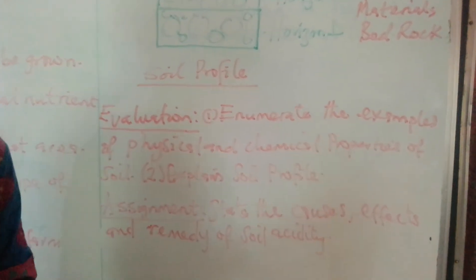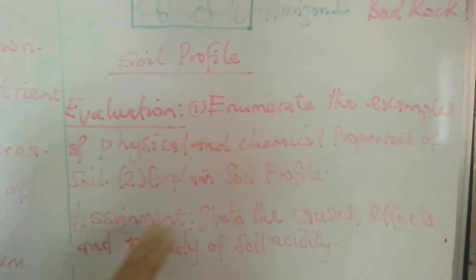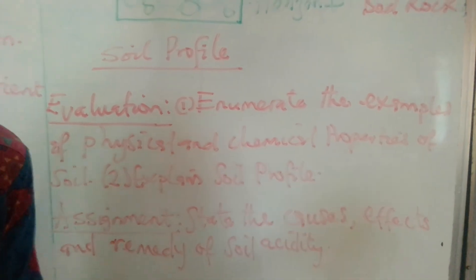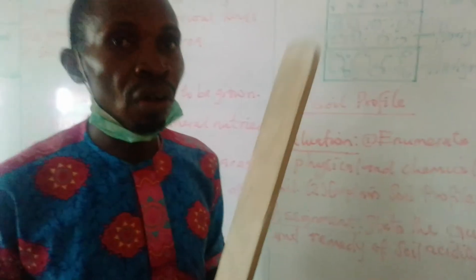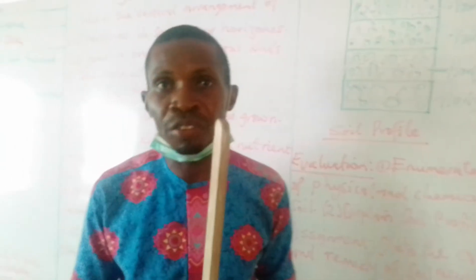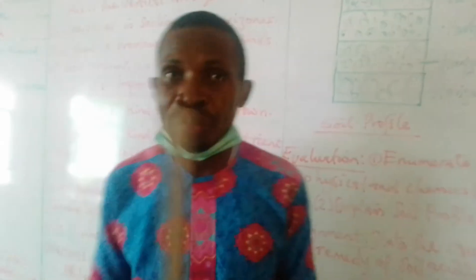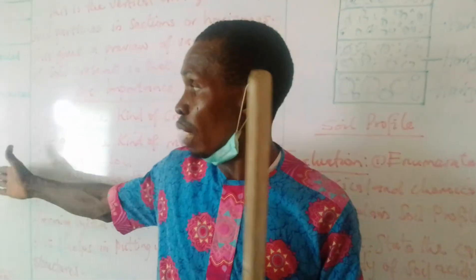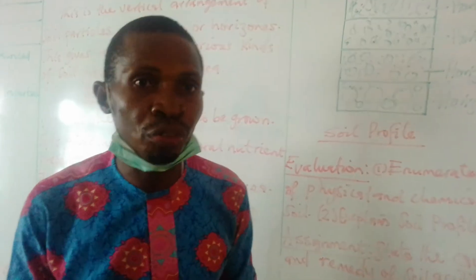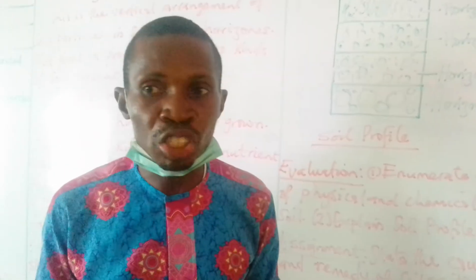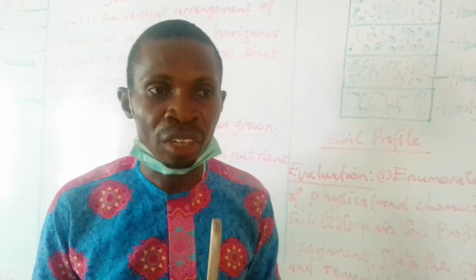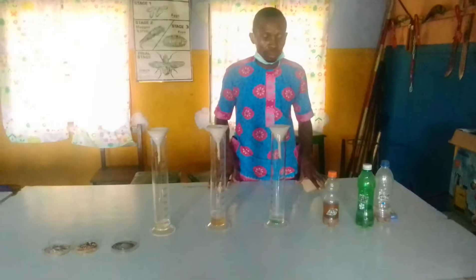I will give it to you as an assignment so you can use it to refresh yourself. For the main work, study the causes, effects, and remedies of soil acidity. Now we are going to move down to the agriculture lab to get you involved with these physical properties, what happens when you use model farms, and how to carry out experiments on soil. Just stay back a while — let's move now to the agriculture lab.